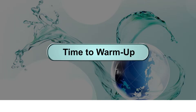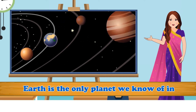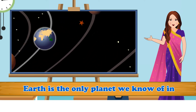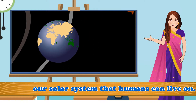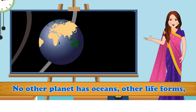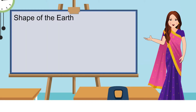Earth is the only planet we know of in our solar system that humans can live on. No other planet has oceans, other life forms, and enough oxygen to comfortably breathe.